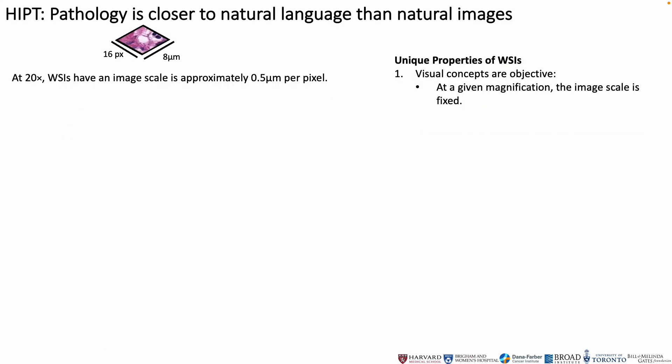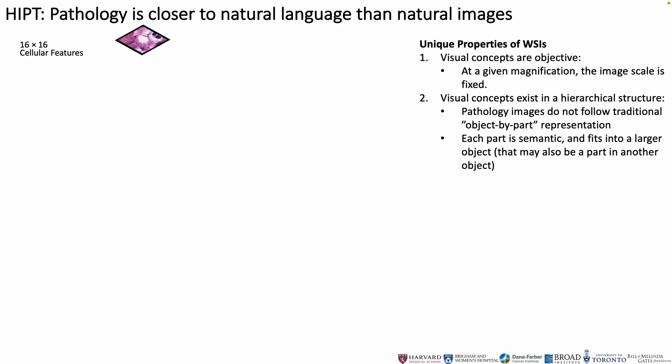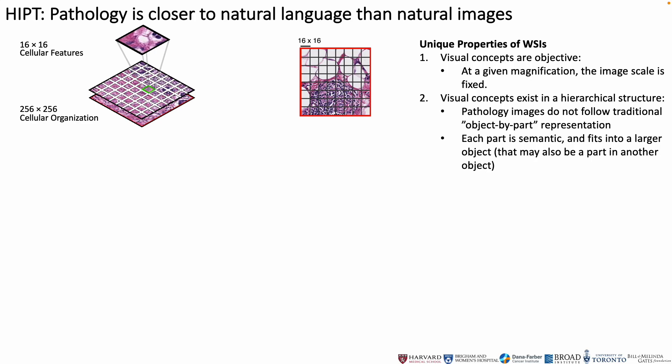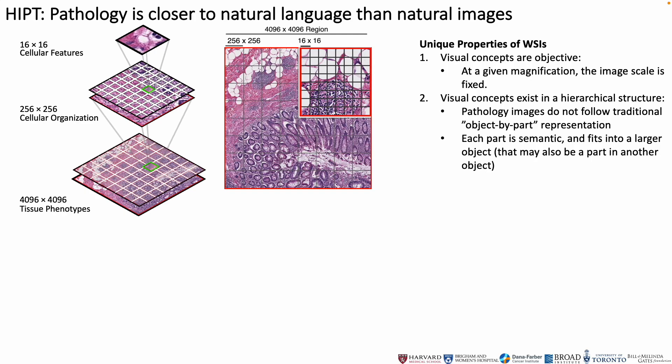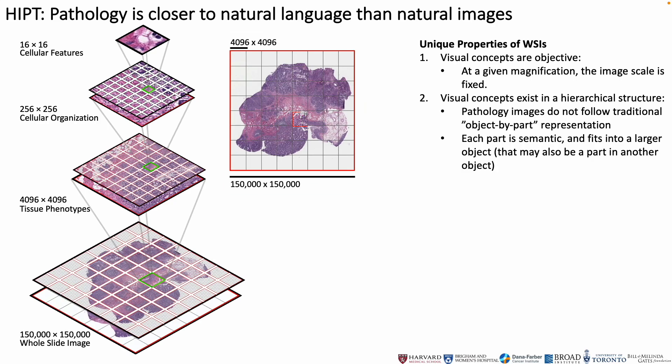Despite these challenges, we know two unique properties about whole slides. First, visual concepts in pathology are objective, as at a given magnification, the image scale is always fixed. Second, whole slides exhibit a hierarchical structure of visual tokens across varying resolutions, from 16x16 tokens defining selectivity, to 256-sized image patches defining cell-to-cell interactions, to 4k-sized image regions defining spatial organization of cells and tissue, with the whole slide depicting the overall tissue microenvironment.